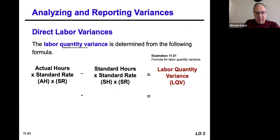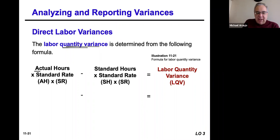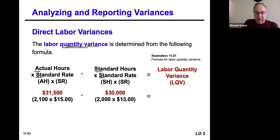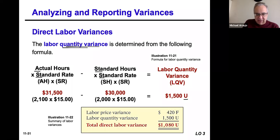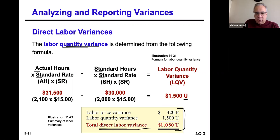Then we have to look at the quantity variance — what was the difference in quantity? For that, we're actually going to be using the actual hours at the standard rate, and we're going to take away the standard hours at the standard rate. So the actual hours were 2,100 times $15 — that's $31,500. But we actually budgeted 2,000 hours at $15, which is $30,000. So that ends up being an unfavorable variance of $1,500 because the actual hours were much higher. That's what causes the total labor variance to be $1,080.